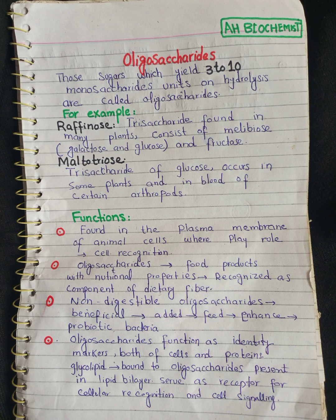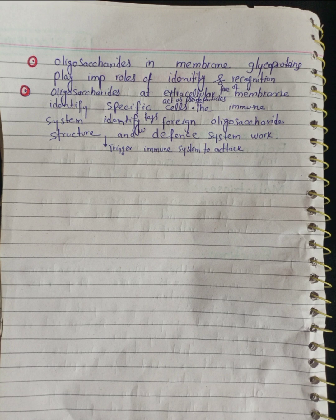Oligosaccharides function as identity markers for both cells and proteins. In the lipid bilayer, oligosaccharides attached to glycolipids serve as receptors for cellular recognition and cell signaling. Oligosaccharides attached to glycoproteins are also present in the lipid bilayer of the plasma membrane.